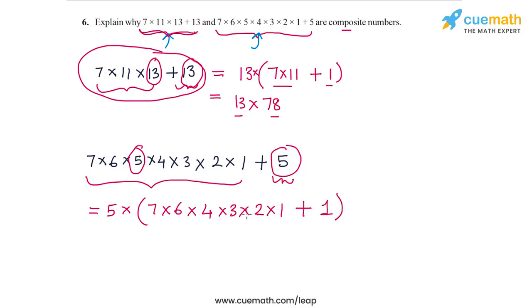And now once again we see that this original number is a product of two smaller numbers, one of them being 5 and the other one being this number. So once again this number is a product of two smaller numbers, so this number is composite as well, and with that we have solved question number 6.